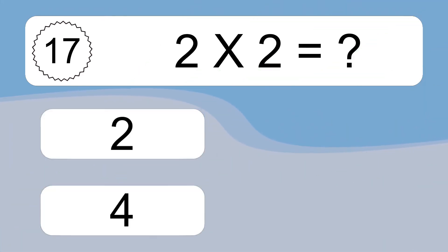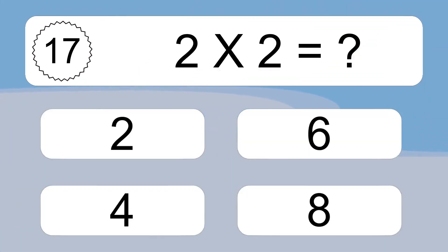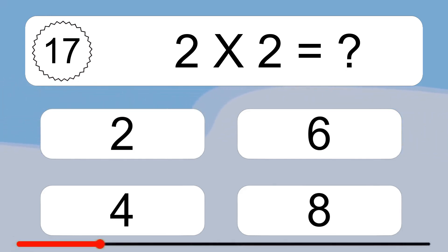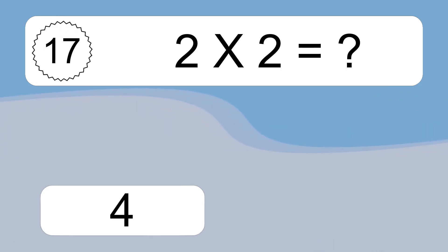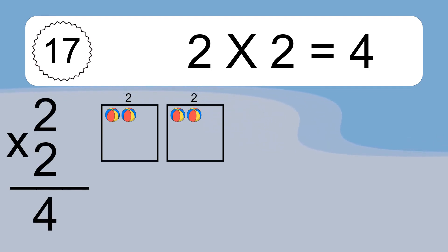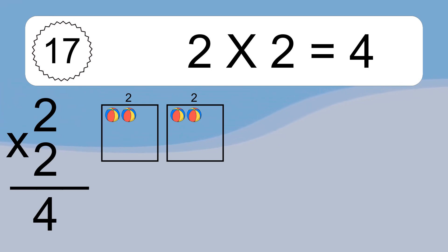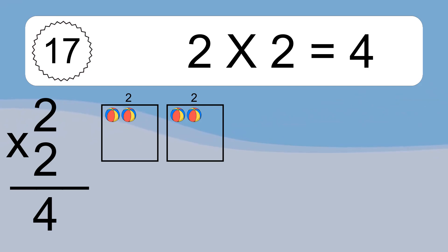2 times 2 equals what? 2 times 2 equals 4. We have 2 boxes, and each box has 2 colorful balls inside. If you count all the balls in all the boxes together, you will have 2 times 2 balls. This equals 4 balls.